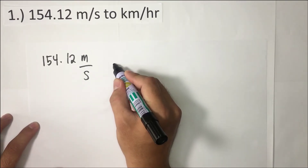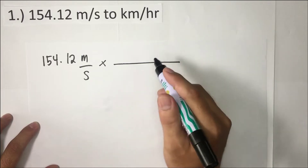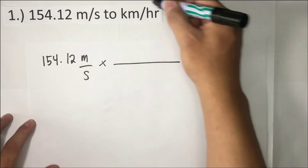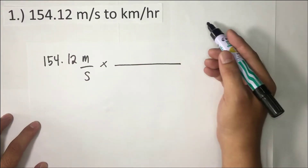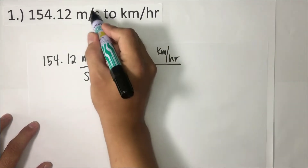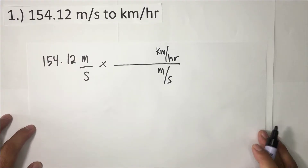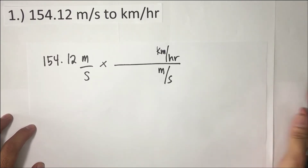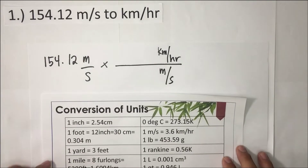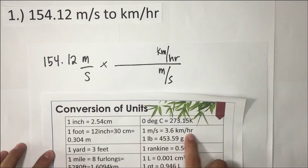Using a conversion table is the easiest and fastest way. As long as you know the standard values, you can easily convert without taking the long method. In converting, put a bar here and a multiplication sign. Always remember that the desired unit — in this case, kilometers per hour — is always placed in the numerator. The unit we want to cancel or eliminate is placed in the denominator. That is always the rule when converting units using a conversion table. According to the conversion table, let's find the value for meters per second to kilometers per hour.